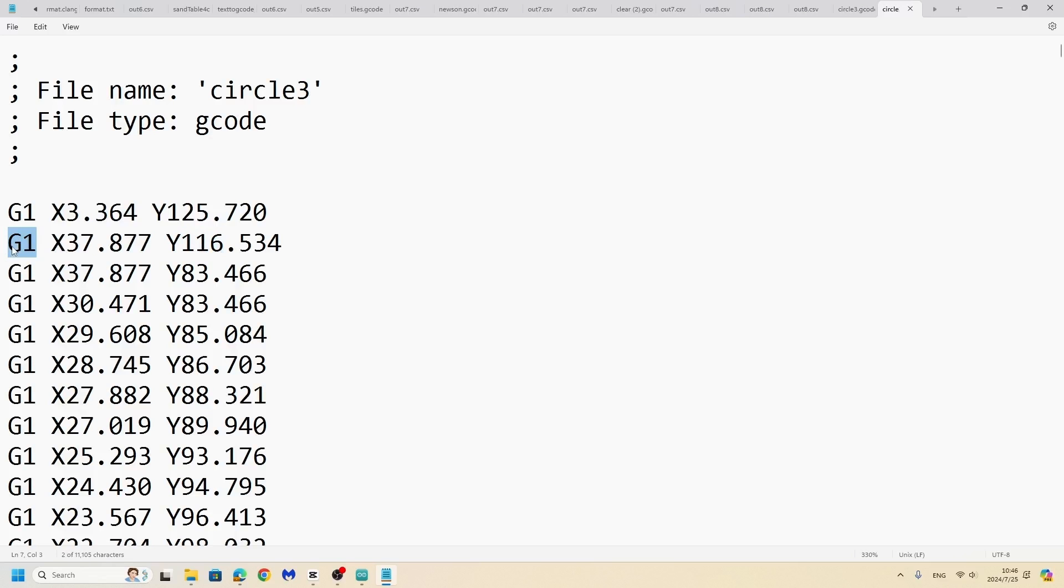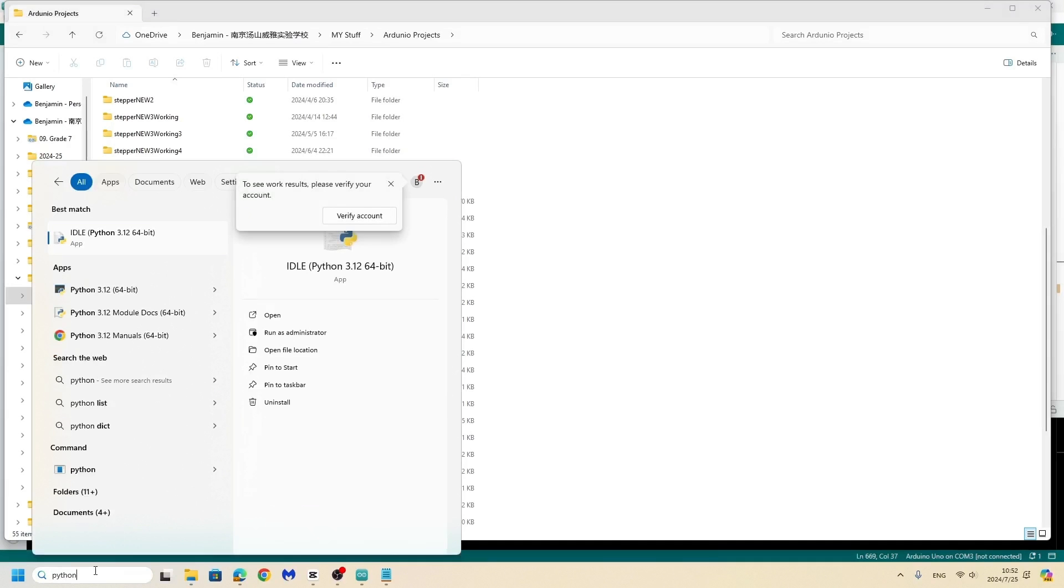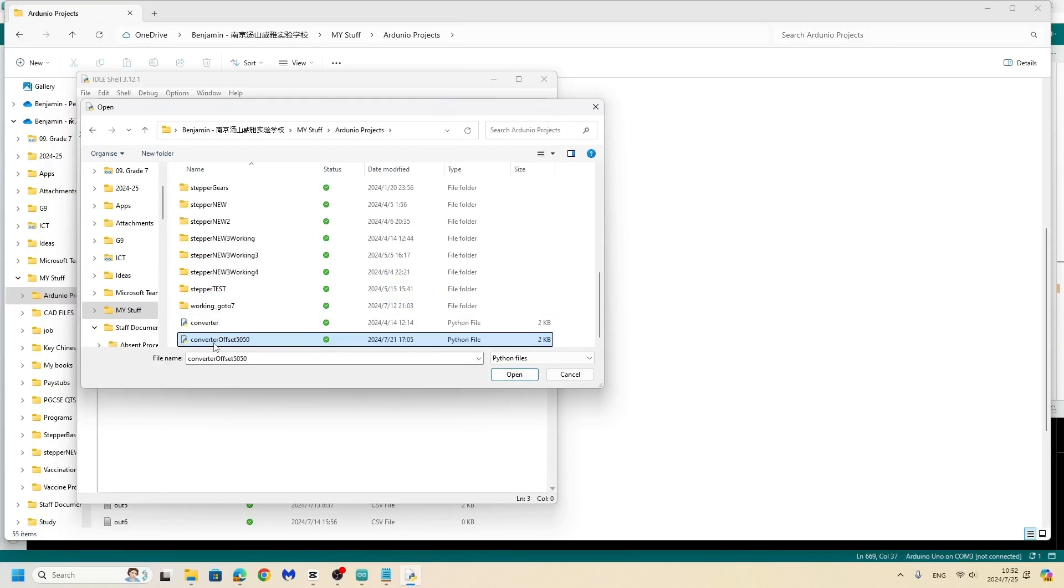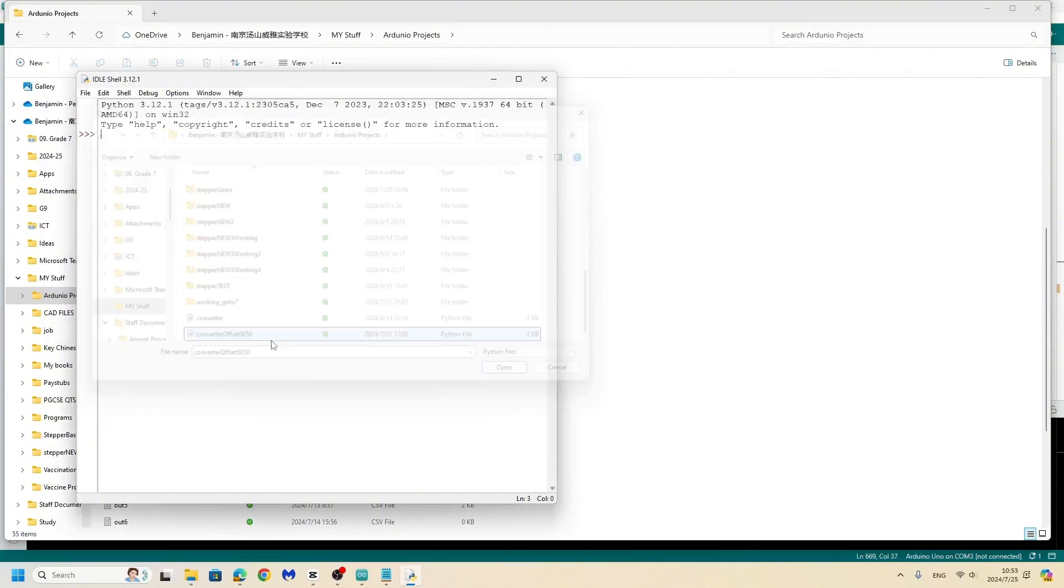You'll notice it does have some decimals and we just want to round up because we don't need to be accurate within one millimeter. Your eye won't be able to tell the difference. I also programmed in Python to extract the x and y coordinates.